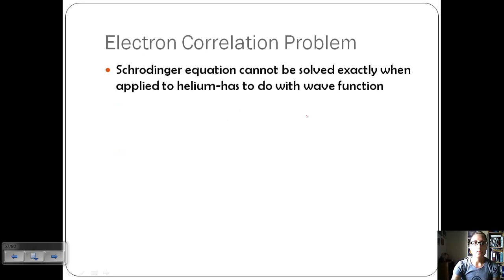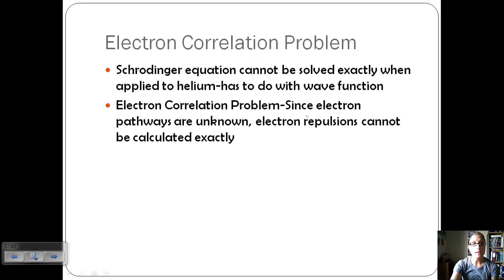We have this electron correlation problem. Previously we talked about the Schrodinger equation, and it cannot be solved exactly when applied to helium. This has to do with its wave function. Once we move past hydrogen, we have more than one electron, and this can cause some problems just like it did with the Bohr model.